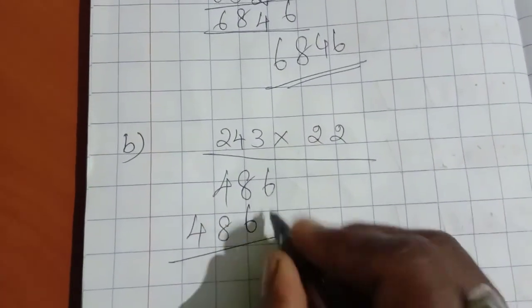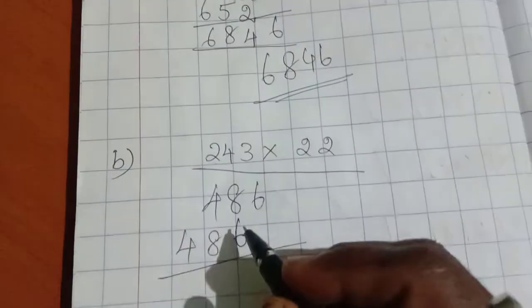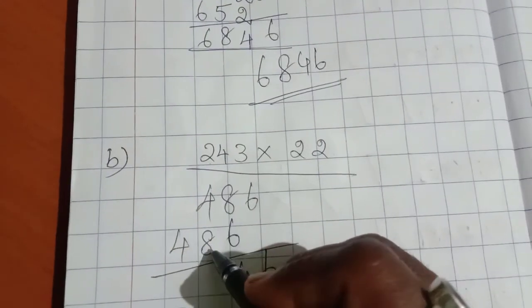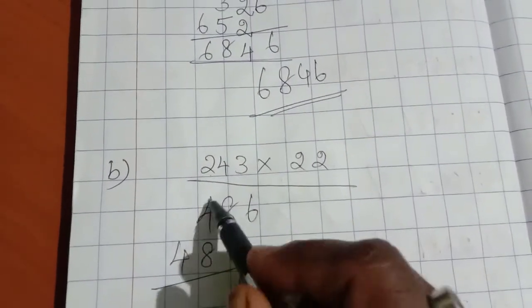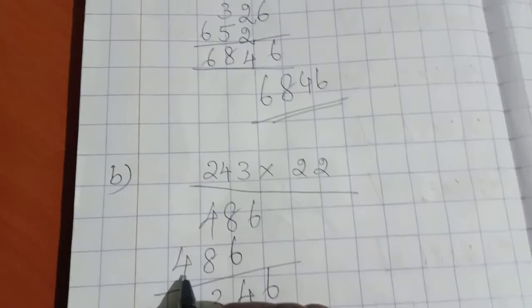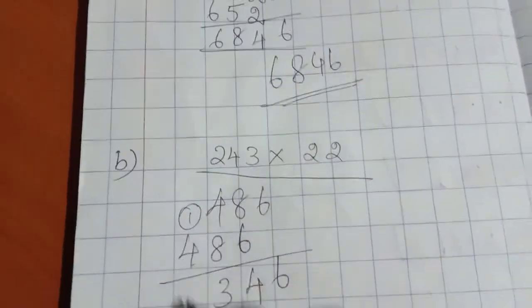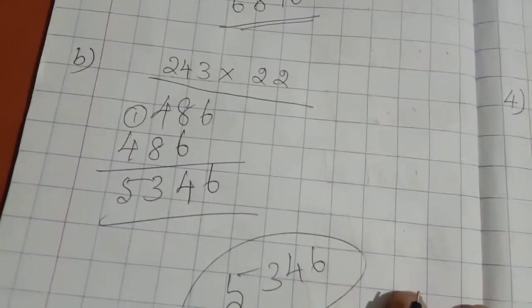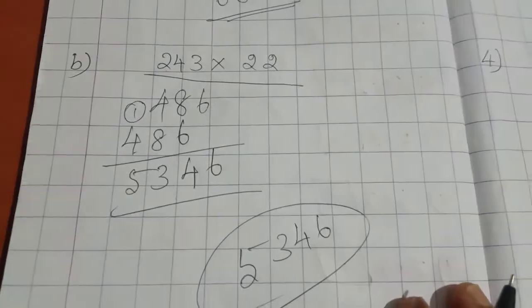Now we are going to add. Six, eight plus six is fourteen, plus one is nine, thirteen plus one is one, five. The answer is five thousand three hundred and forty-six. We will see one more sum also.